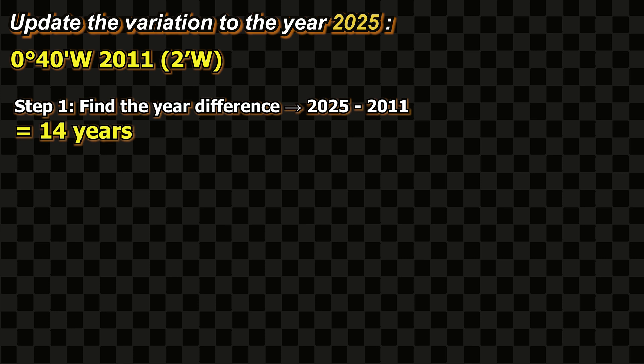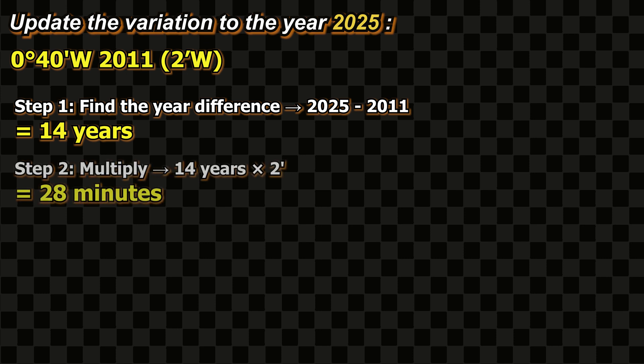Find the year difference between 2011 and 2025. The answer is 14 years. Step 2: Multiply 14 by 2 minutes. The answer is 28 minutes.